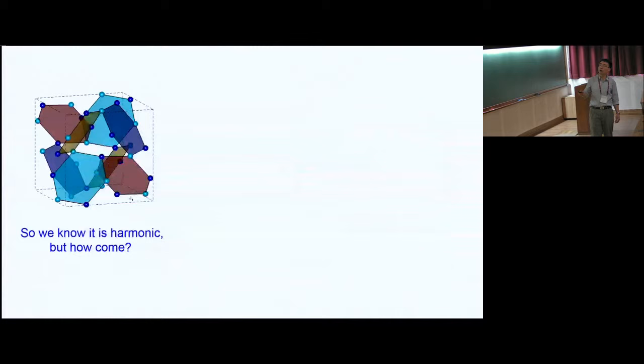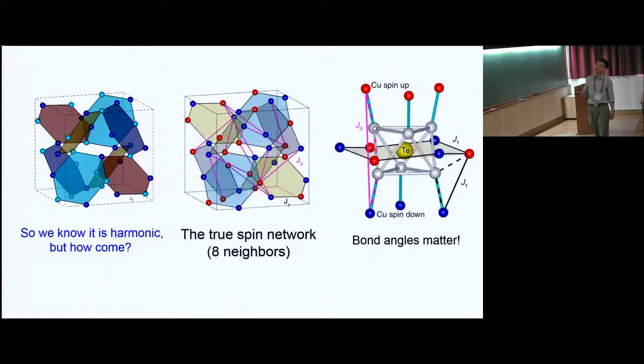So we started to wonder why. So how come that with this connection of four neighbors in total, how come that is so harmonic? And just to tell you the answer quickly, it turns out that the true spin network contains another very strong interaction, which is between the ninth nearest neighbor, which is a little bit surprising. But it turns out that the reason is in the bond angle. So for J1, for instance, despite the close distance, actually from copper to oxygen and back to copper, this angle is pretty bad. It's between ferromagnetic and antiferromagnetic situation. So the interaction is not very strong. Whereas this one, despite the distance and the fact that there are two oxygens sitting in between, it's very straight bond. So I will come back to this later.